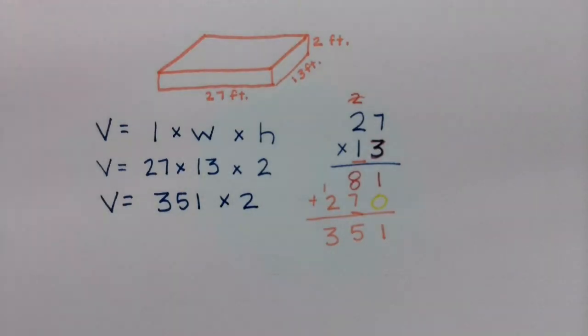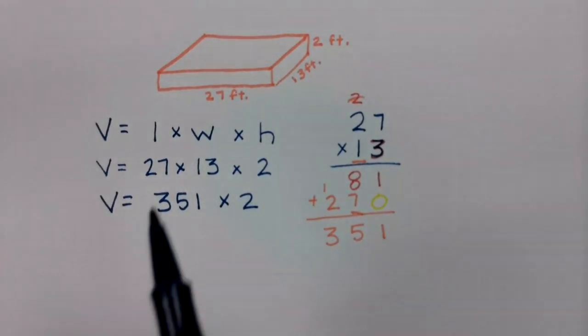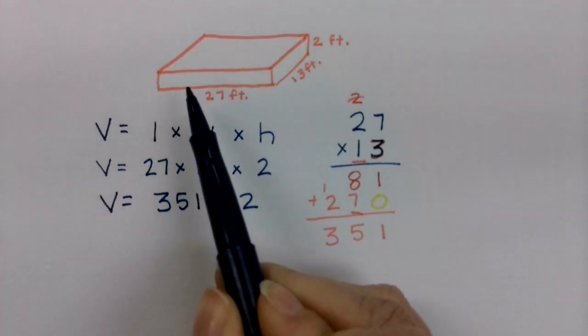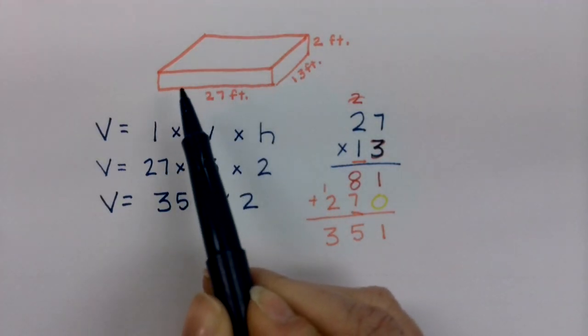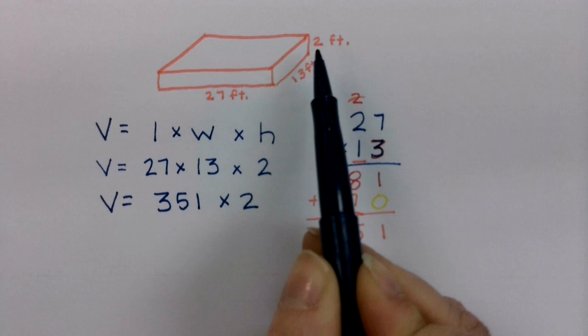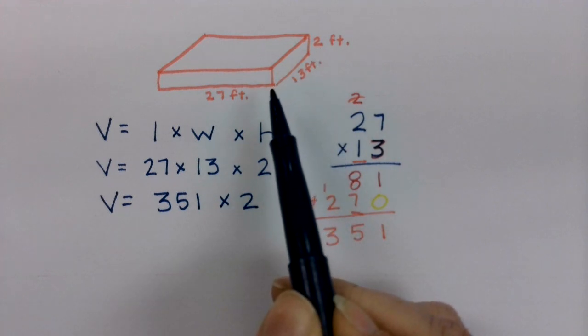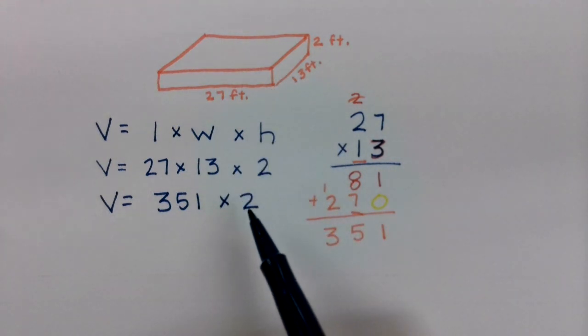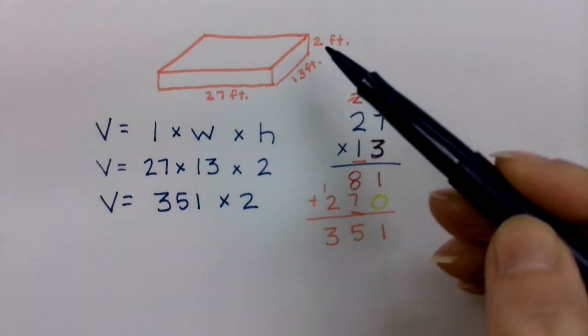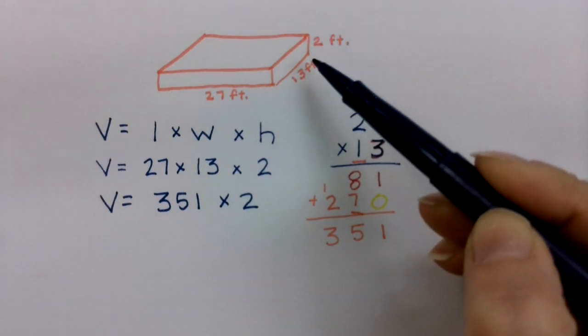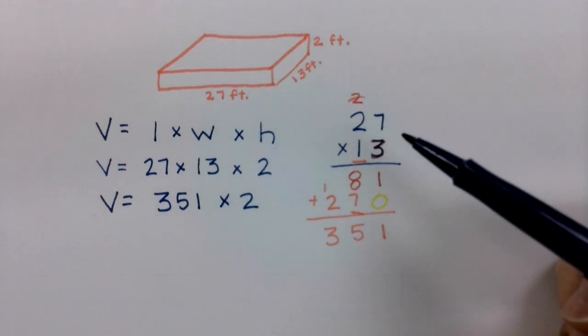Now I'm going to multiply that by 2. Think about what we have just done here. We have found that this layer would have 351 feet cubed, right? But now we have to remember that really there's going to be 2 layers of that.